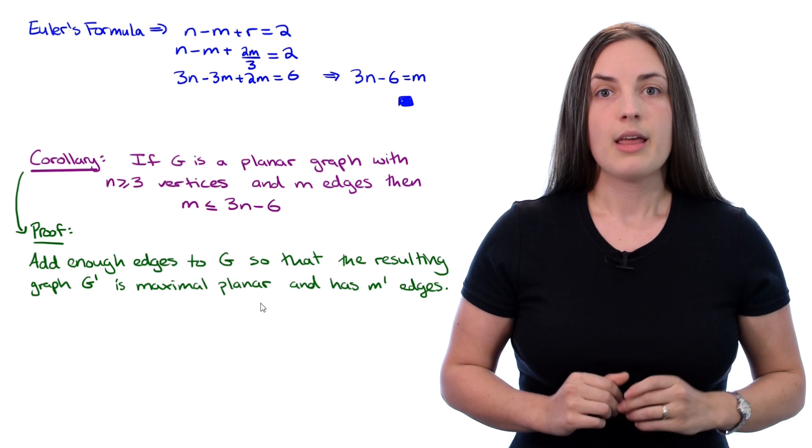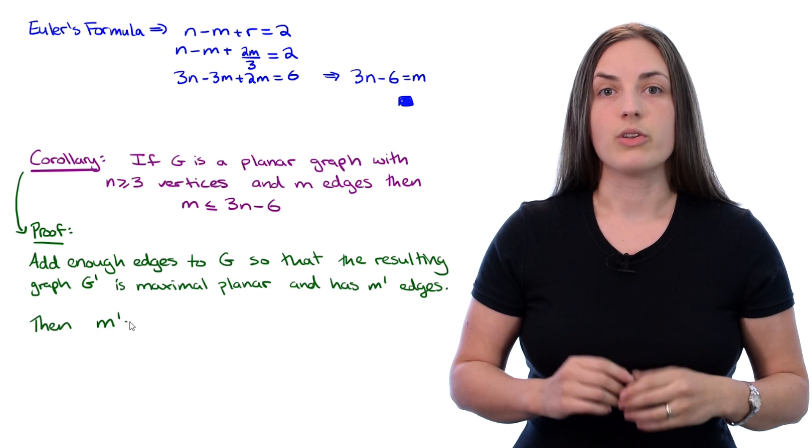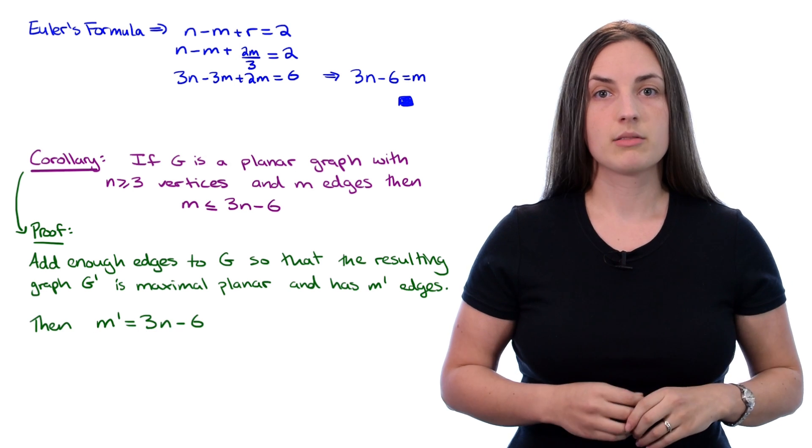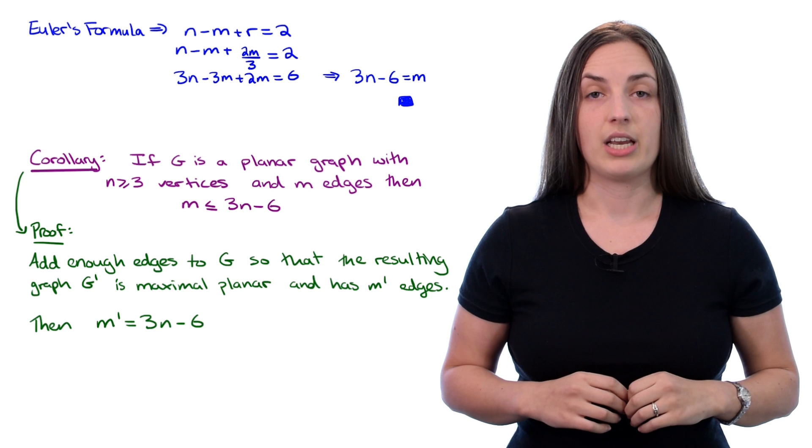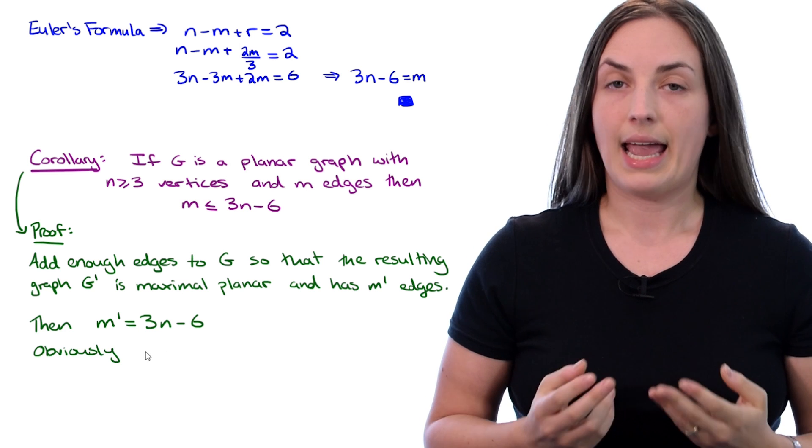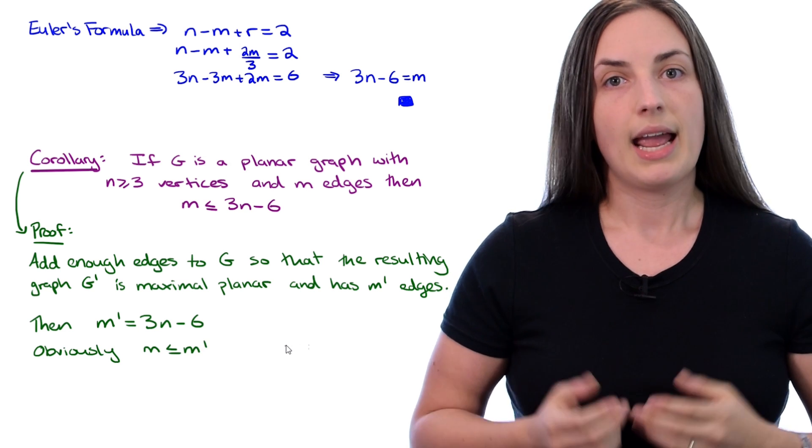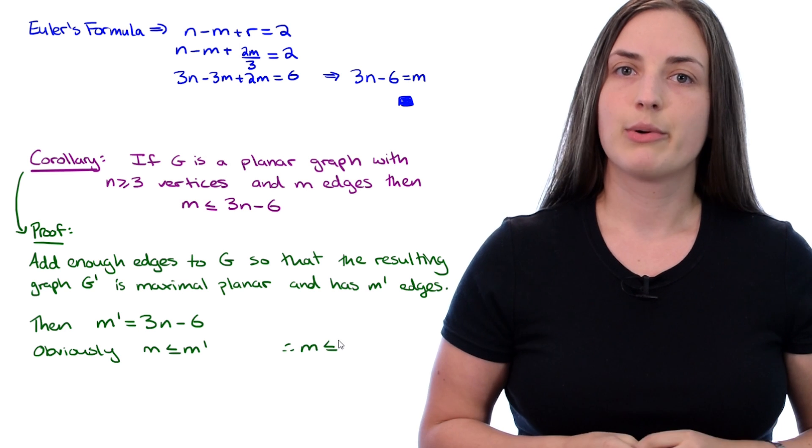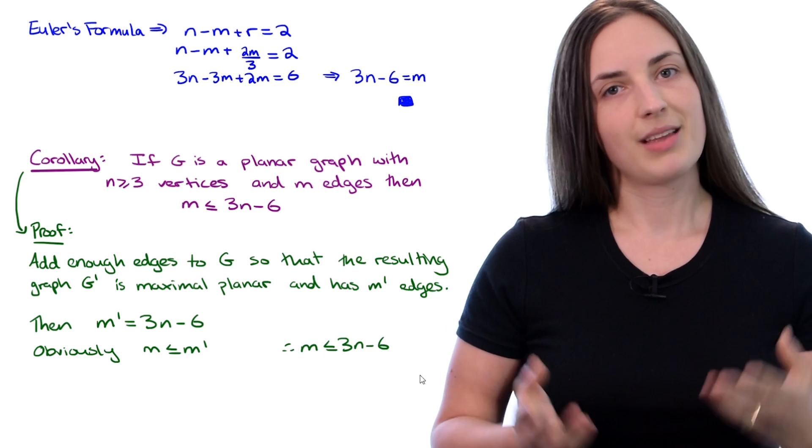We know from the previous theorem that M prime equals 3 times N minus 6 because the number of vertices hasn't changed. But obviously M is less than or equal to M prime, and therefore M is less than or equal to 3 times N minus 6. And the proof is done.